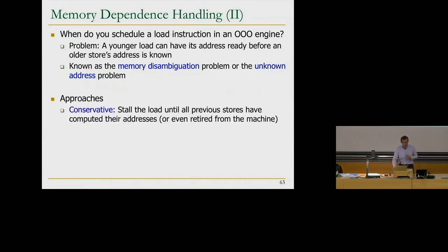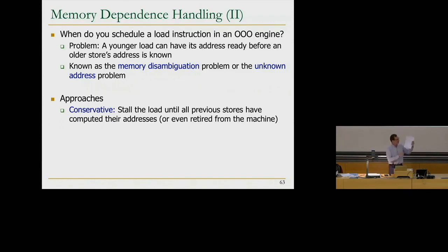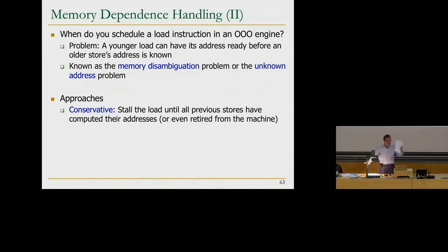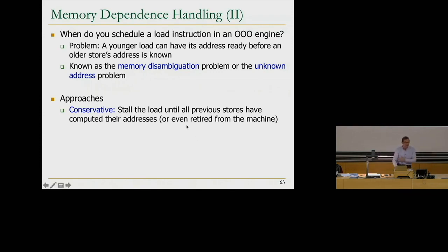There are multiple approaches to this. One is the conservative approach, which is terrible for performance — you stall the load until all previous stores have computed their addresses. You basically wait no matter how long it takes, 1,000 or 5,000 cycles. When all of them have computed their addresses, you know which store you're dependent on. Or if you're even more conservative, you wait until all stores have retired and updated memory. But that takes even longer. So the conservative approach is terrible for performance.